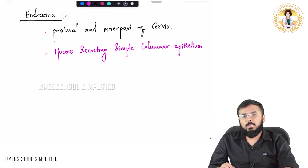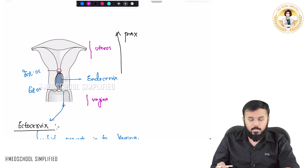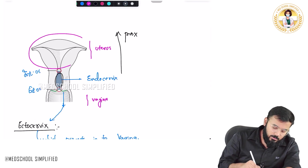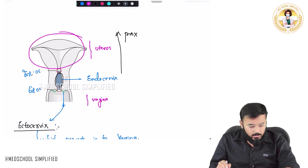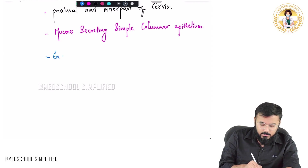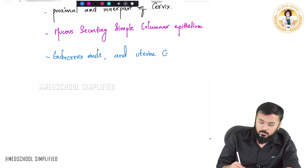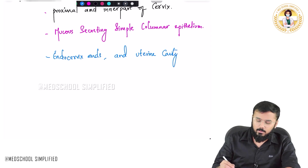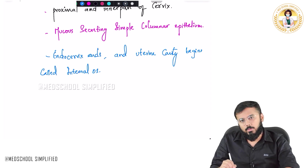The epithelium which we have over here is mucous secreting simple columnar epithelium. Now, wherever the endocervix is ending, that is the entry point for the uterine cavity. There you have got an os and that os is called the internal os. So the endocervix ends, the uterine cavity begins, and this point is called the internal os.